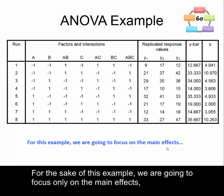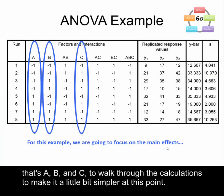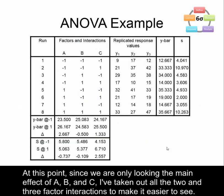For the sake of this example we're going to focus only on the main effects — that's A, B, and C — to walk through the calculations and make it a little bit simpler. Since we're only looking at the main effects of A, B, and C, I've taken out all the two and three factor interactions to make it easier to see.